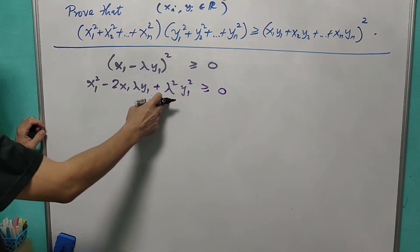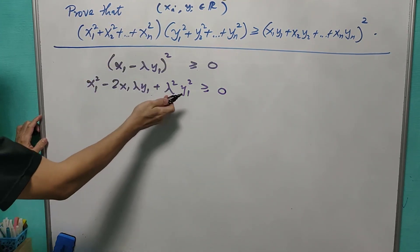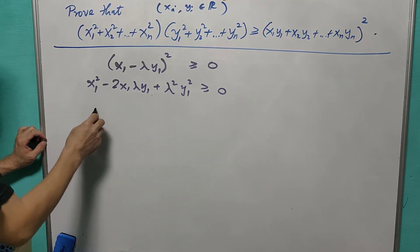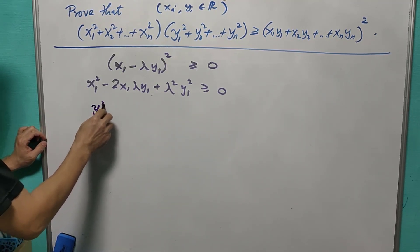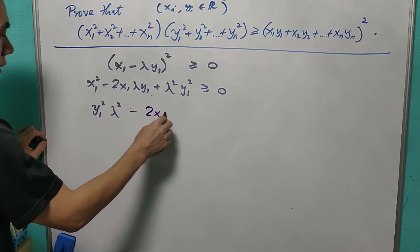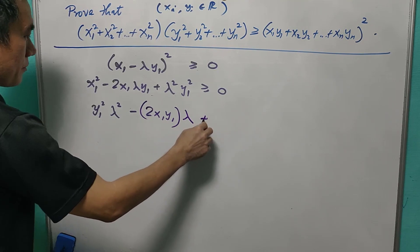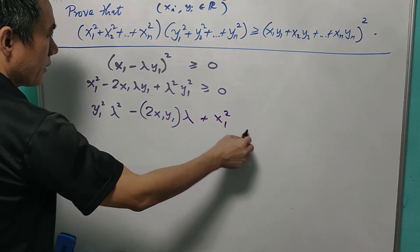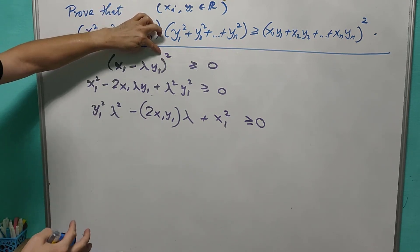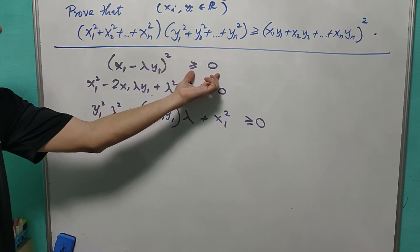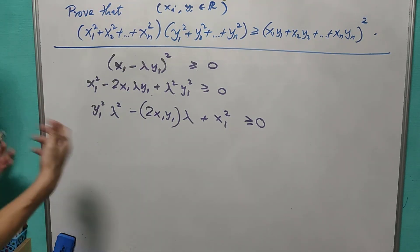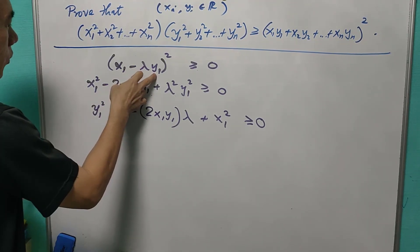Now I will make lambda the subject. This is a quadratic expression in lambda: y1²·λ² − 2x1y1·λ + x1² ≥ 0. From the idea that the square of any real number is at least zero, we get this inequality. And we can do the similar thing for all xi, yi.